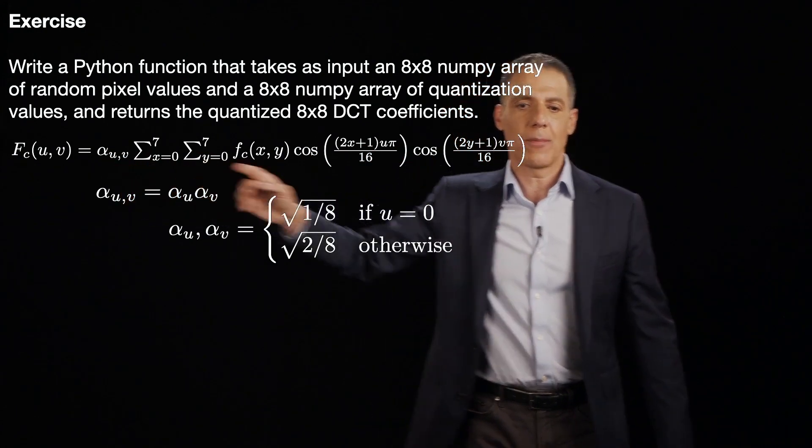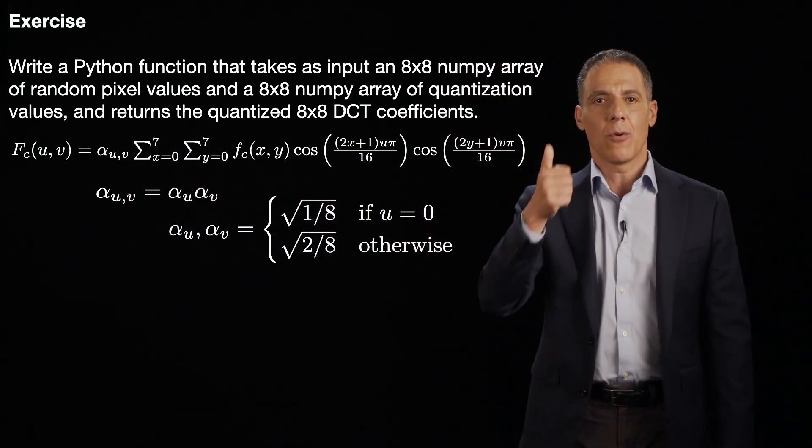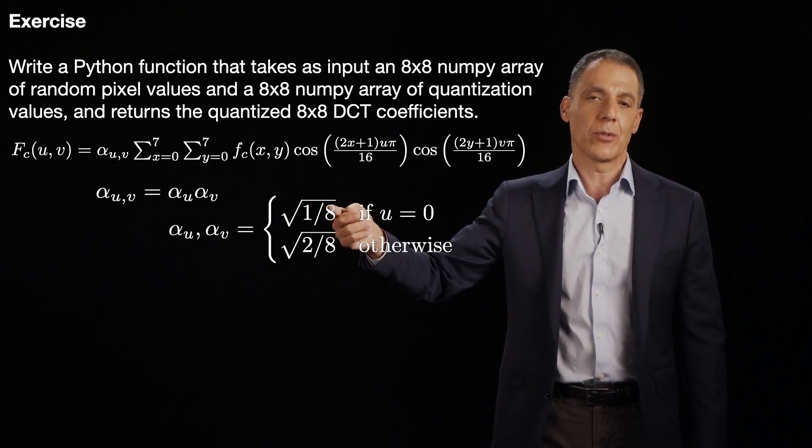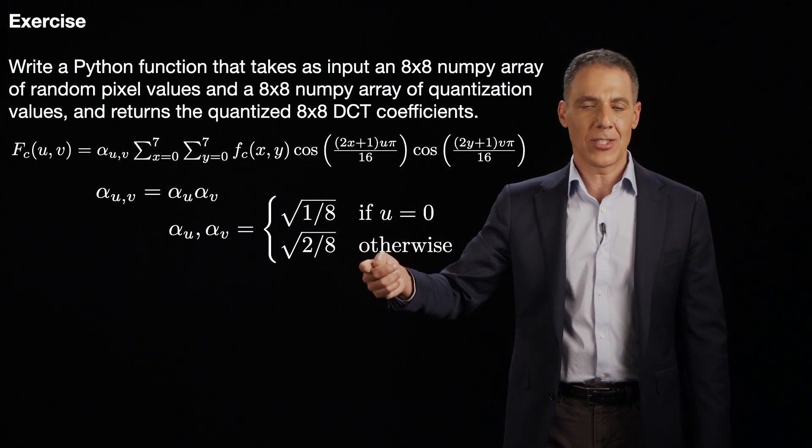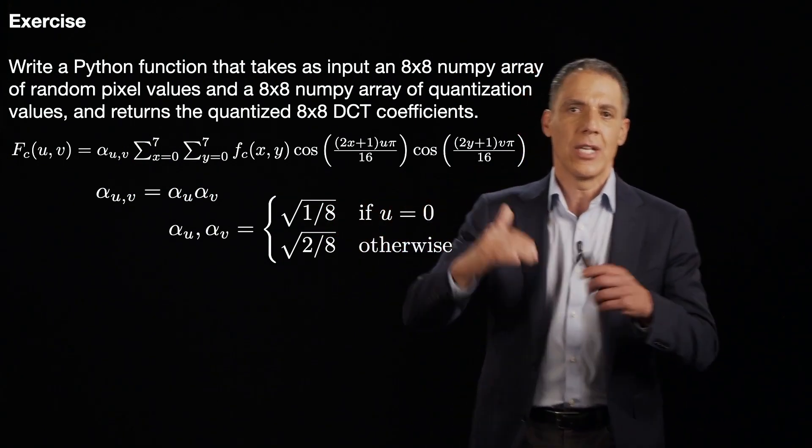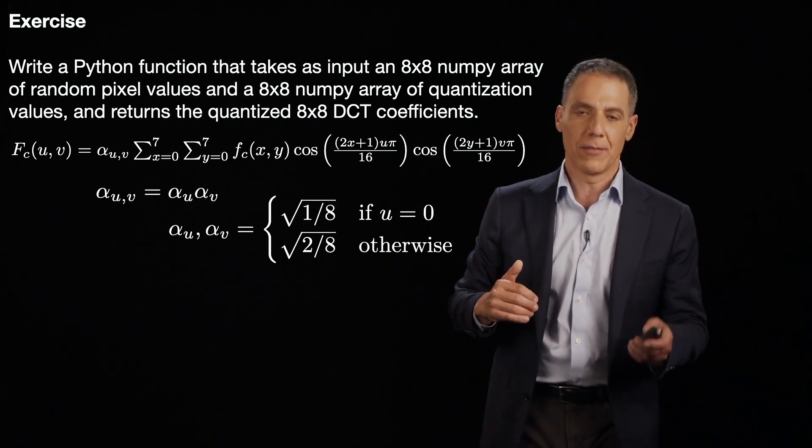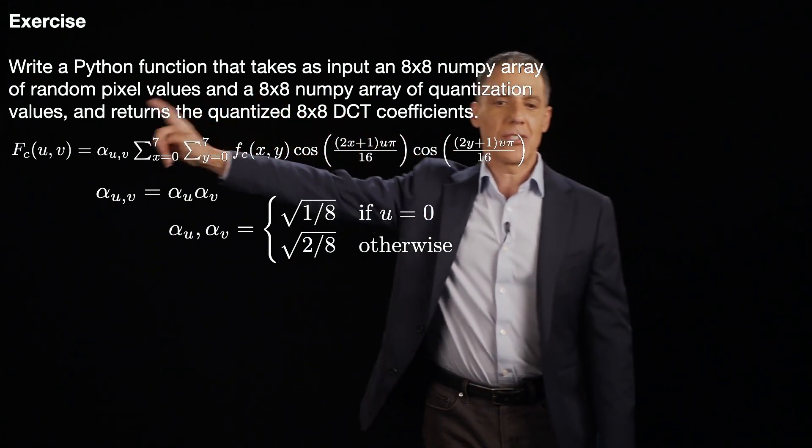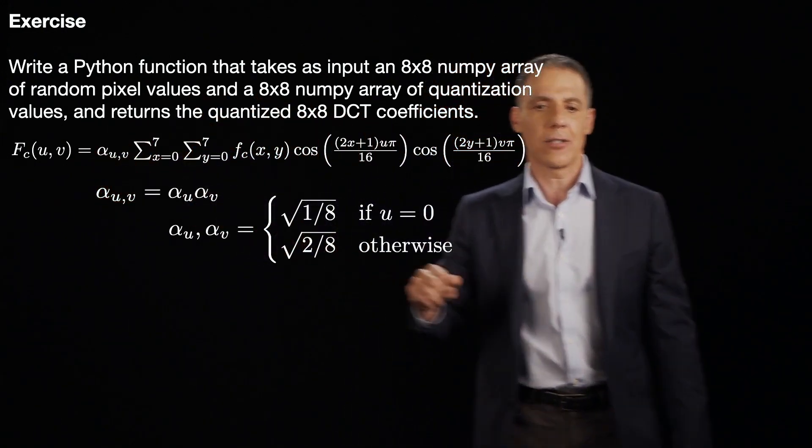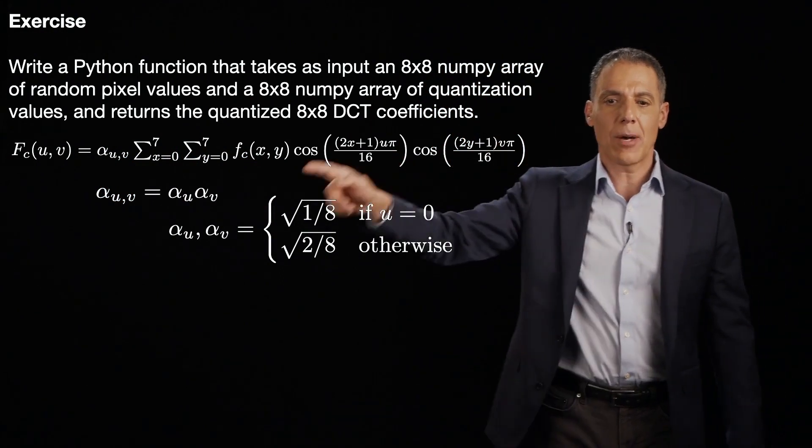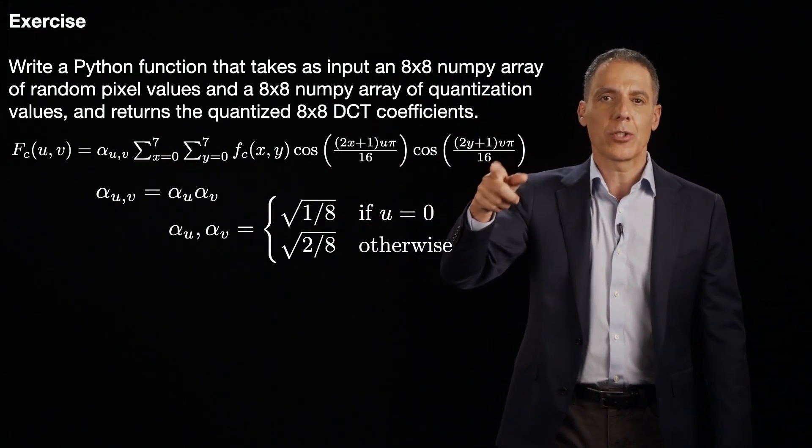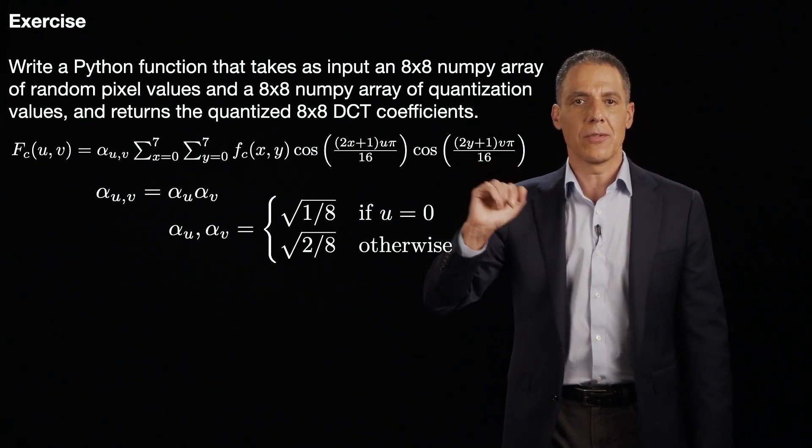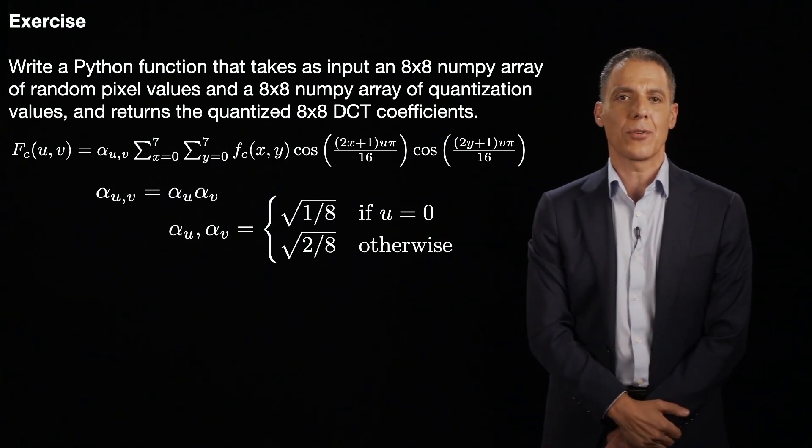And then that scale factor up front is simply determined as follows. For u equals 0 or v equals 0, the alpha u and alpha v are equal to square root of 1 over 8 each. And otherwise, it's equal to the square root of 2 over 8. This is just a scale factor to balance out the overall scale of the DCT. Okay, so that's the DCT. Pretty easy to calculate. Basically, what we're going to do is you're going to have a double loop to evaluate each frequency here. And then here you're going to sum up over all pixel values in the block and the corresponding cosine values evaluated at each x, y, u, v location. All right, go ahead and give that a try and then we'll go through my solution.